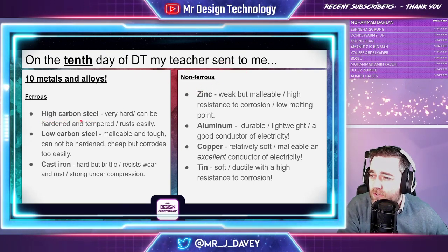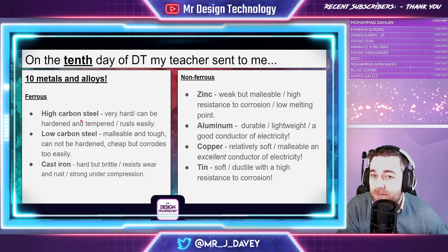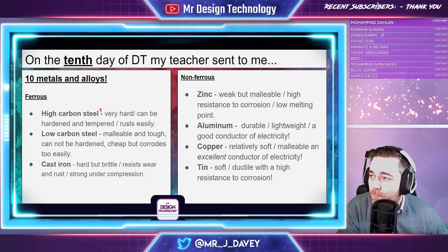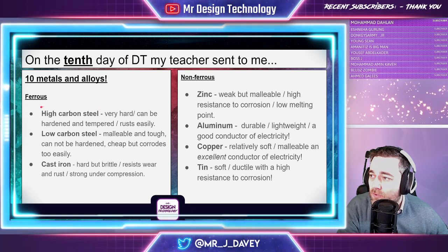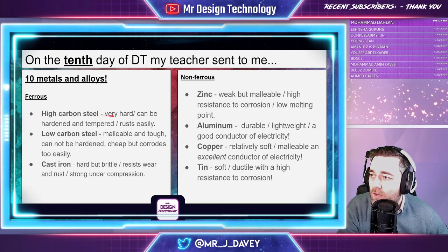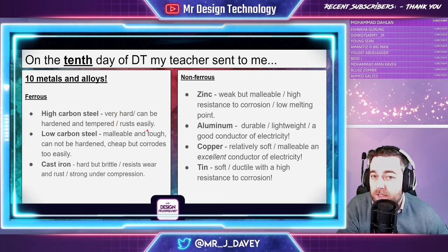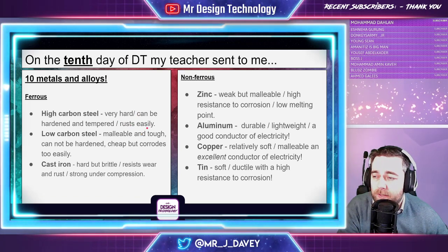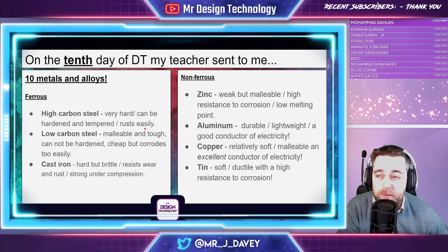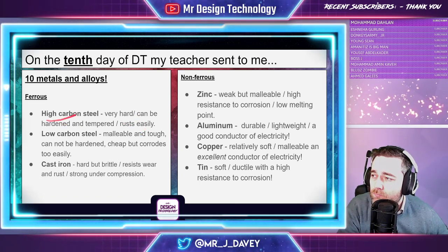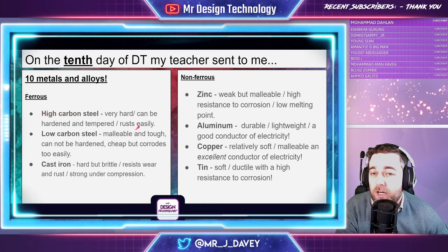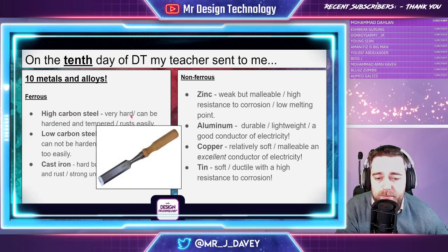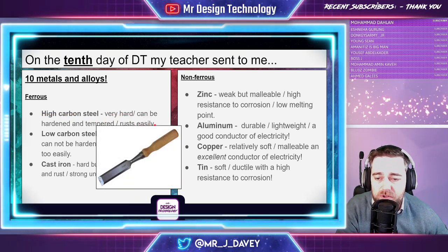First we have high carbon steel. From a revision point of view, put the metal name on one side of the card and bullet points about what's good and bad on the other. High carbon steel is very hard, can be hardened and tempered, but rusts easily.